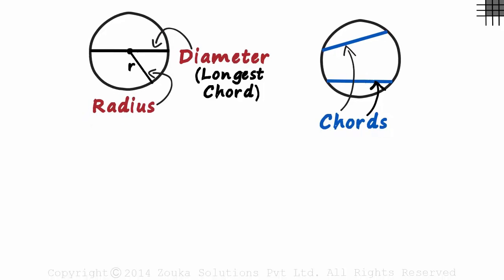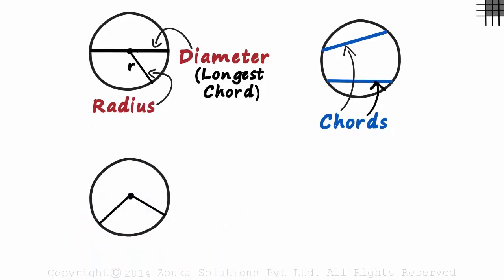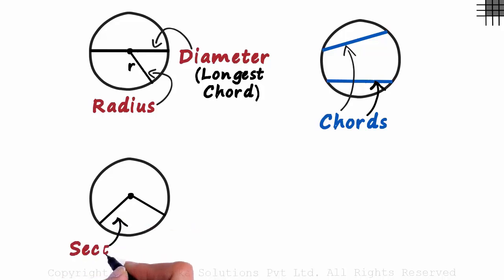The next concept is pretty interesting. When we draw two radii in a circle, what we get is a sector. This region inside is called the sector of this circle.